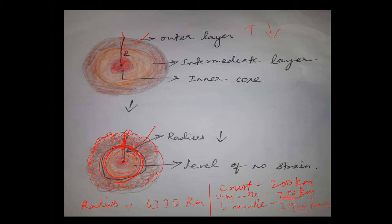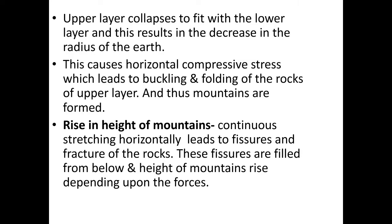All this leads to the formation of mountains on the surface of the earth. The continuous stretching forces cause the crust to break and form fissures, which are filled slowly from below. This leads to a continuous rise in these fissures, and horizontal compression results in buckling and folding of the rocks of the upper layer, forming mountains.